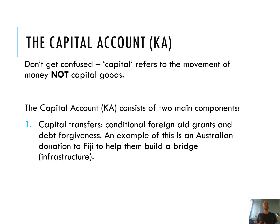The capital account consists of two main components. The first is capital transfers — this is conditional foreign aid, grants, and debt forgiveness. Conditional foreign aid is where governments give money to other countries to help them do something specific. For example, Australia gives money to Fiji to build a bridge — that's conditional. Australia gives money to Fiji to do whatever it wants is unconditional and not recorded here. Debt forgiveness — if one country says to another you don't have to pay back that debt anymore — is also recorded here.